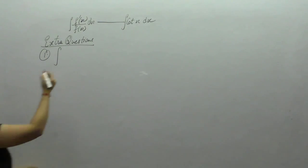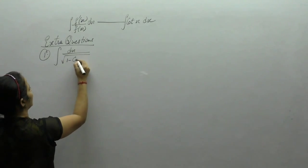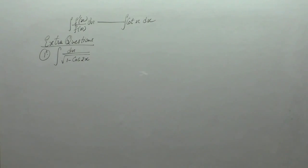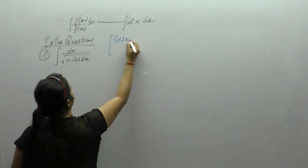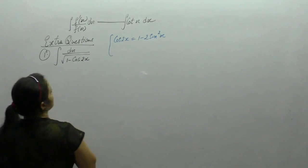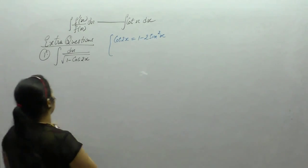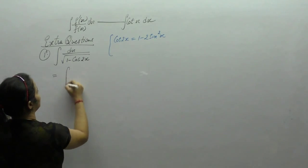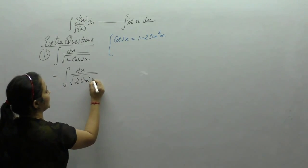Question 1: Integral of dx upon square root of 1 minus cos 2x. We have the formula for cos 2x, that is 1 minus 2 sin² x. So from here we can find the value of 1 minus cos 2x, that is 2 sin² x. The expression becomes dx upon square root of 2 sin² x.